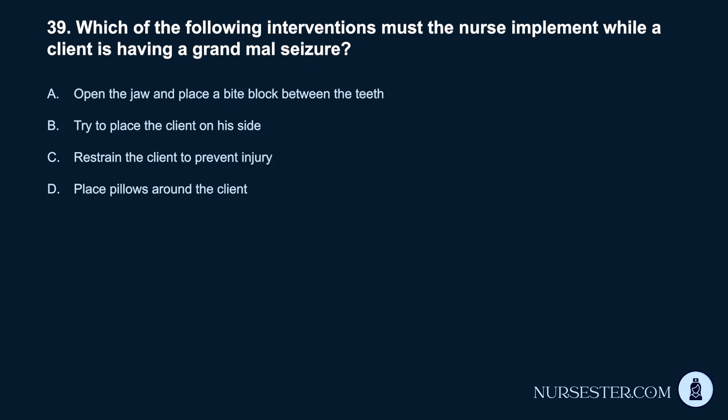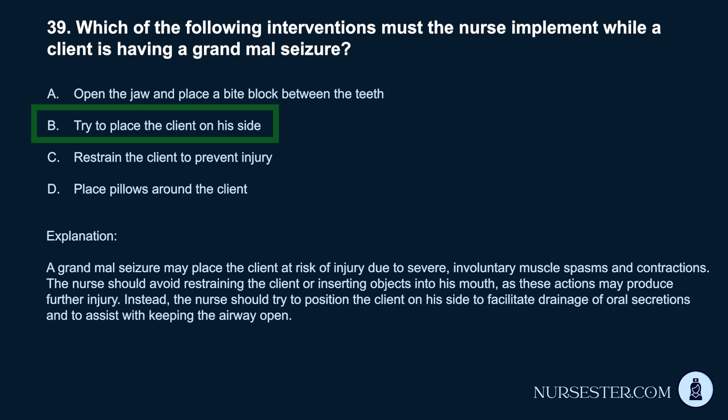Question 39. Which of the following interventions must the nurse implement while a client is having a grand mal seizure? a. Open the jaw and place a bite block between the teeth. b. Try to place the client on his side. c. Restrain the client to prevent injury. d. Place pillows around the client. Correct answer: b. Try to place the client on his side. A grand mal seizure may place the client at risk of injury due to severe, involuntary muscle spasms. The nurse should avoid restraining the client or inserting objects into his mouth, as these may produce further injury. Instead, the nurse should position the client on his side to facilitate drainage of oral secretions and keep the airway open.